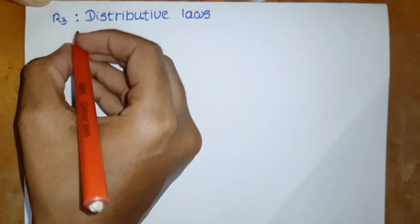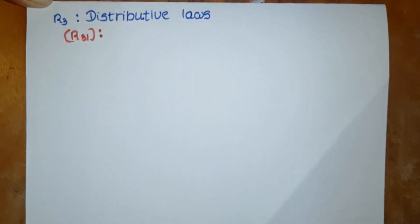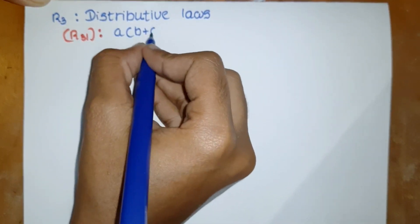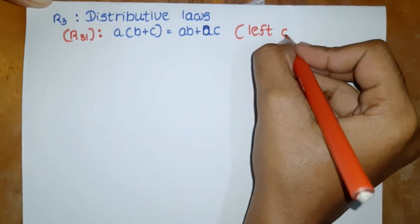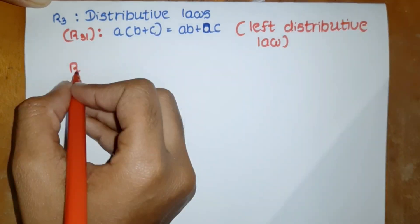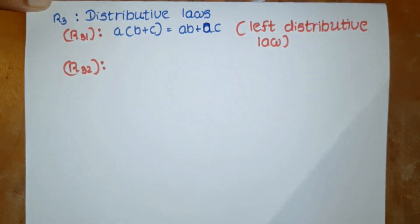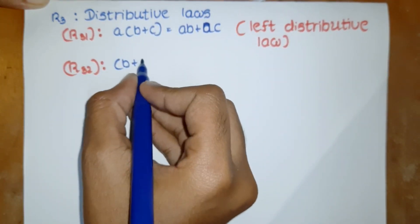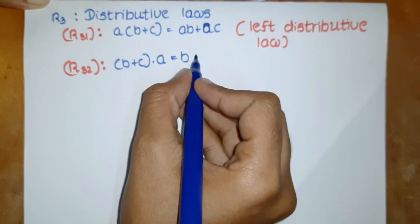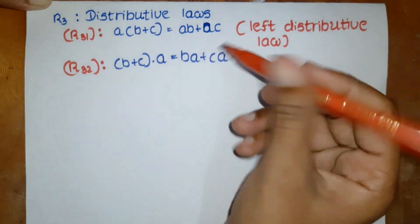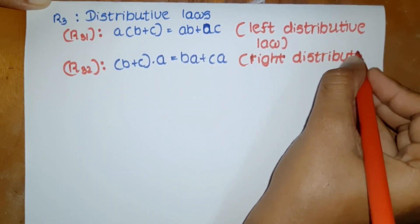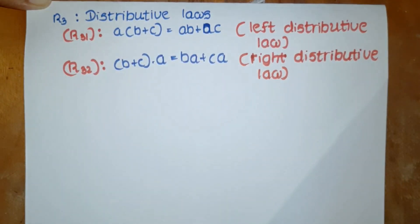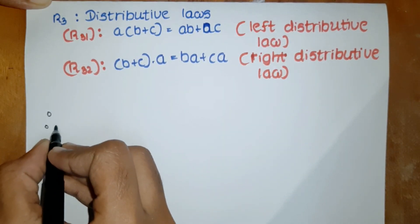Then we consider the distributive laws. The left distributive law: a times (b plus c) equals ab plus ac. The right distributive law: (b plus c) times a equals ba plus ca. Therefore, if all these conditions are satisfied, we can say R is a ring under usual addition and multiplication.